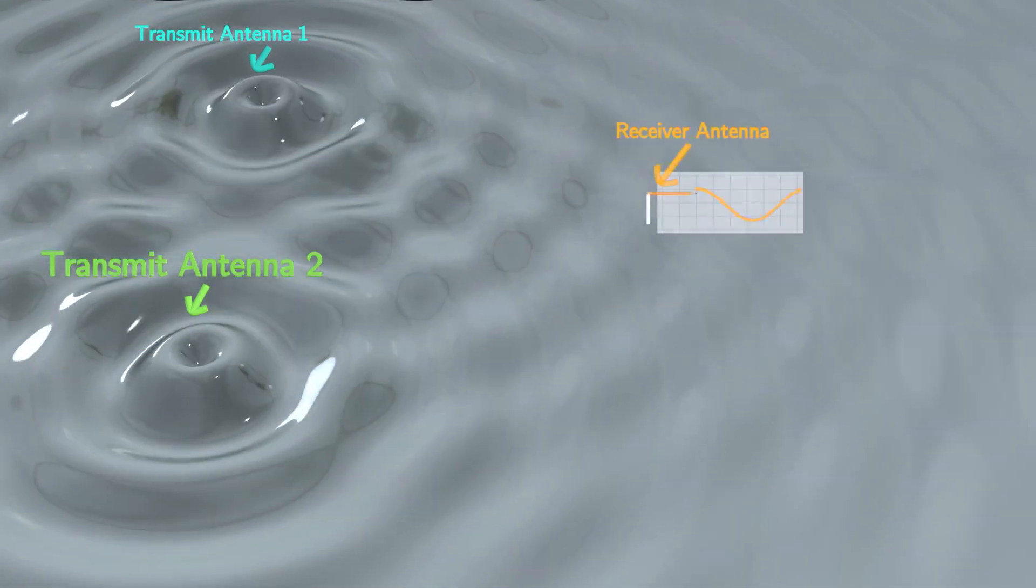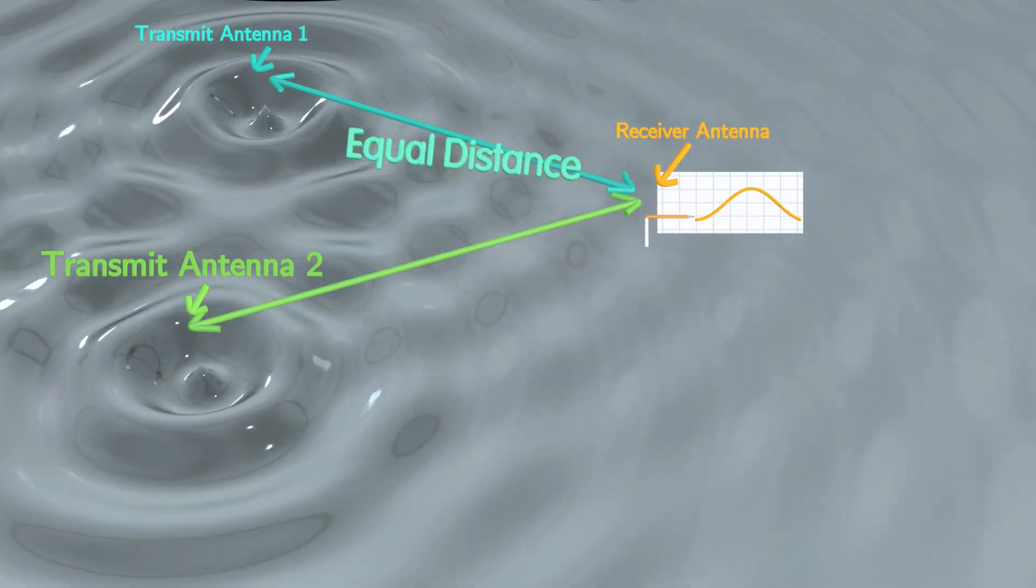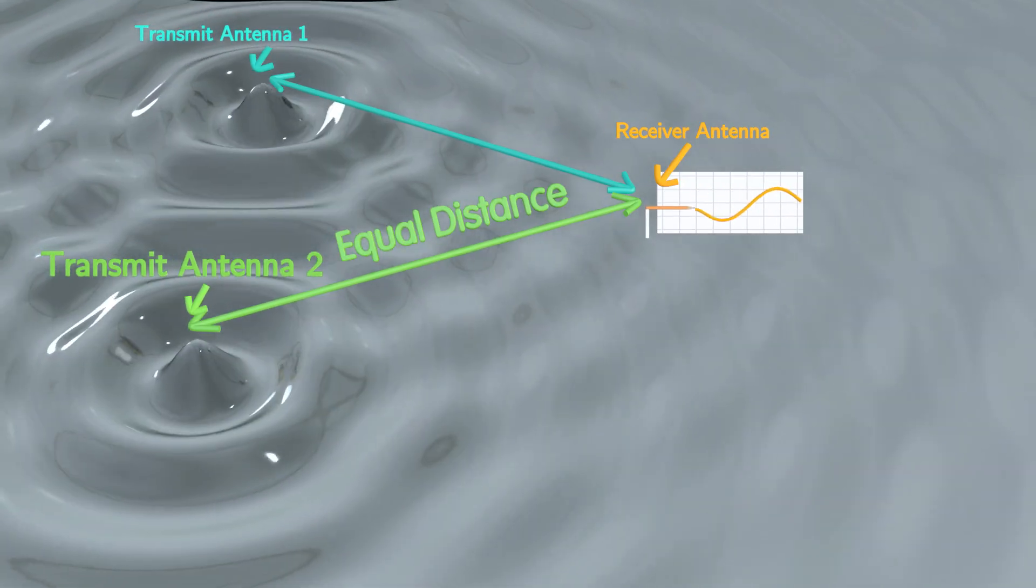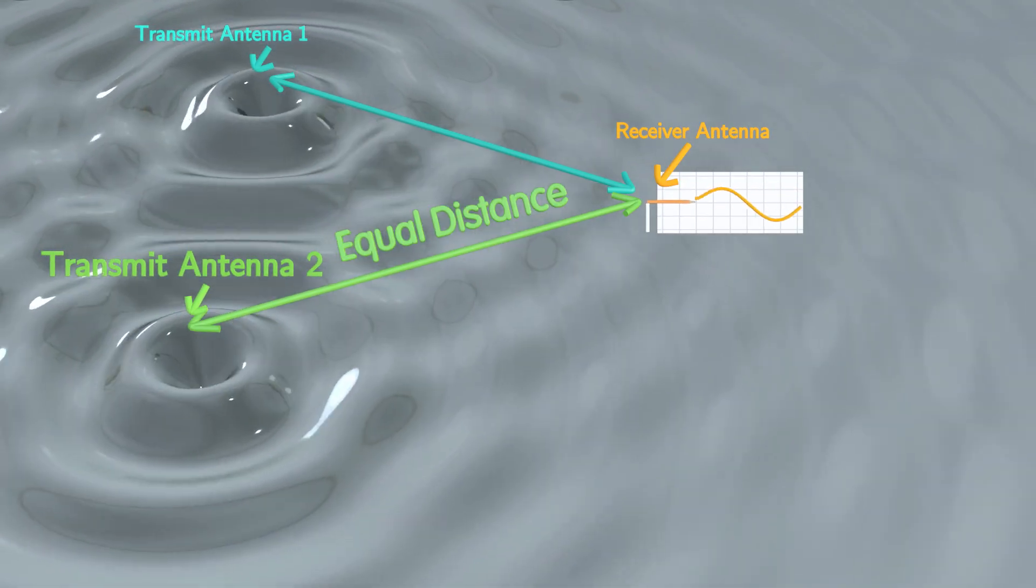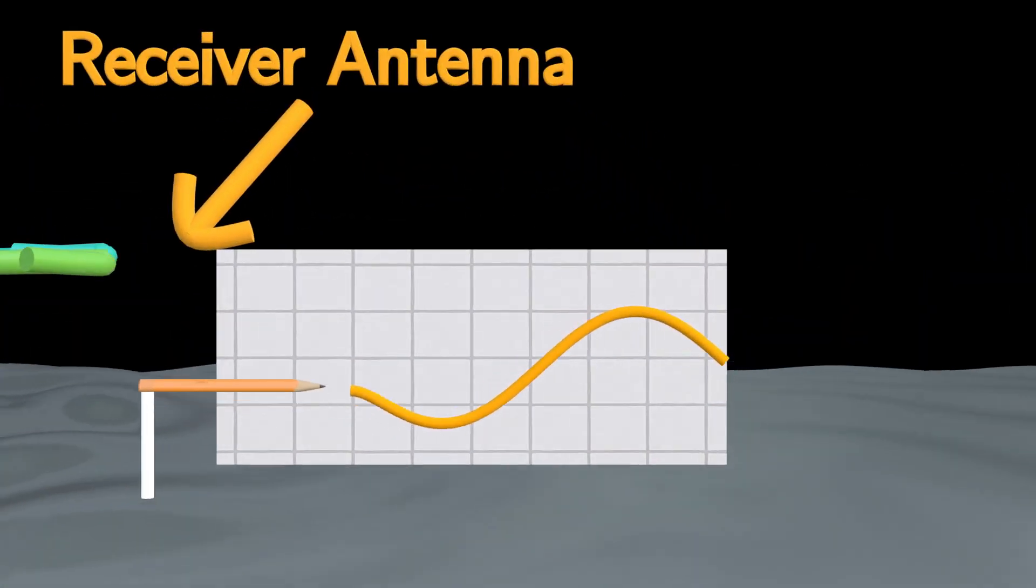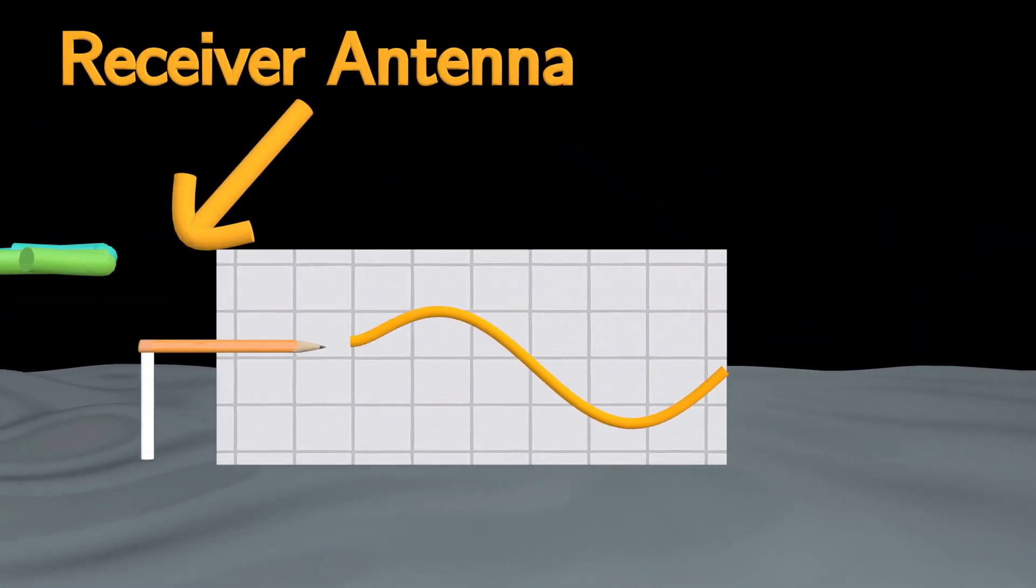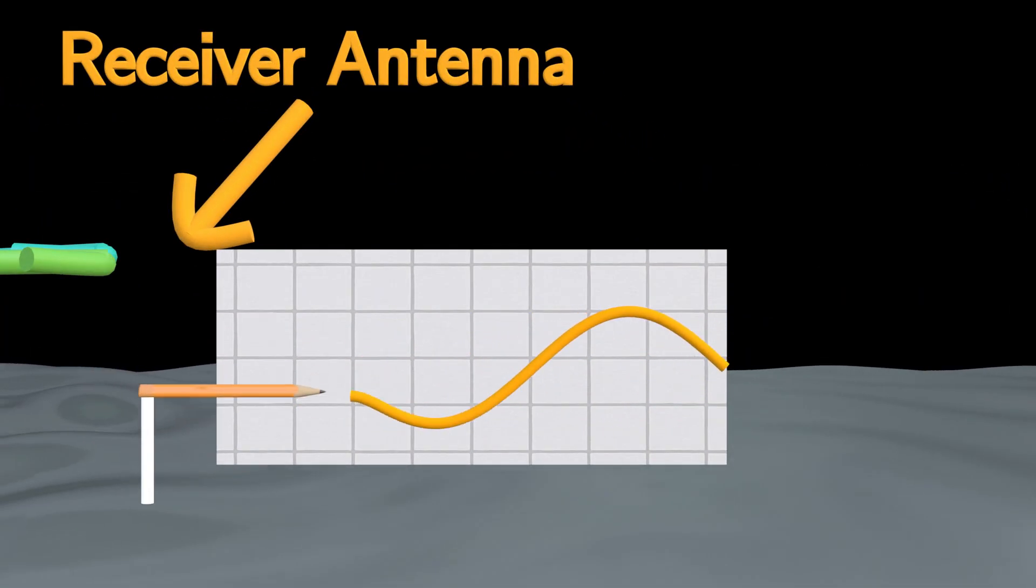Suppose the receiver antenna is positioned at an equal distance from all transmit antennas. In that case, the transmitted signals will align perfectly at the receiver, combining constructively and effectively doubling the received power.